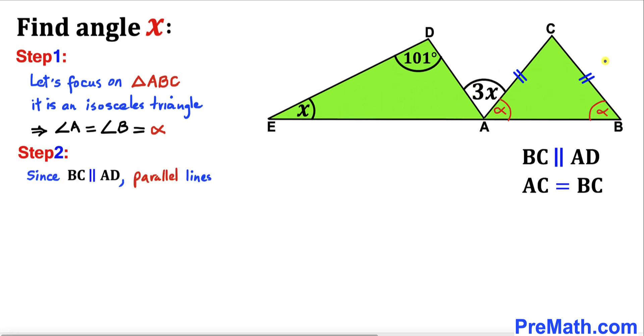Here's our next step. We know that these lines BC and AD are parallel, so therefore this angle ABC and this angle EAD are corresponding angles and they are congruent. If this angle is alpha, then this angle has got to be alpha as well.